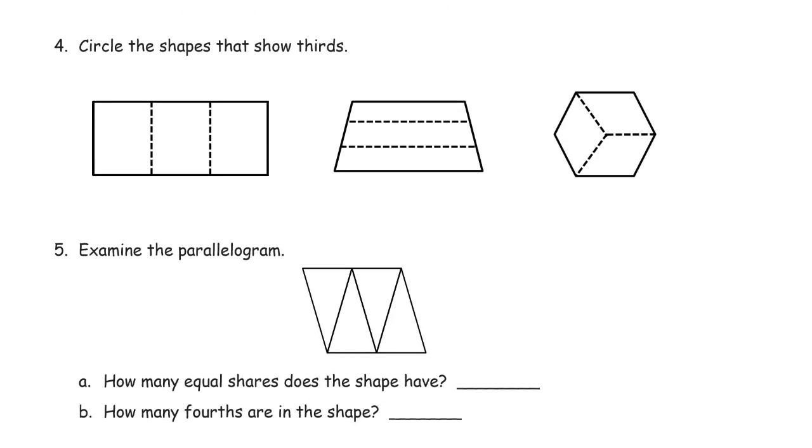Circle the shapes that show thirds. So three equal parts is what you need for thirds. This one has three equal rectangles, so those are thirds. Now, with this trapezoid, these may look like they're the same, but keep in mind that down here, the shape, this part is longer than this part here, so that this one is actually shorter than this piece. So those are not equal. And with this one, this is just like the pattern block hexagon when you put the blue rhombuses together to make it. So these are all the same rhombus. There's three of them, so that's thirds.